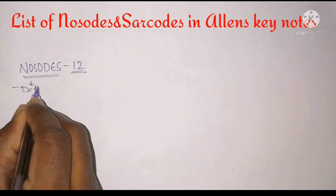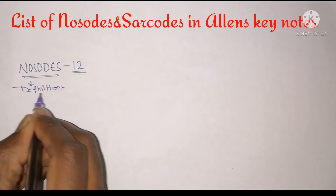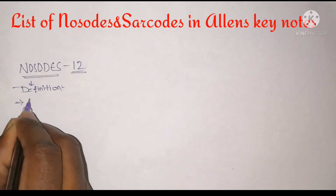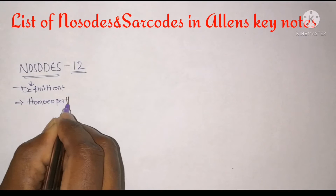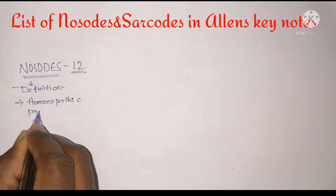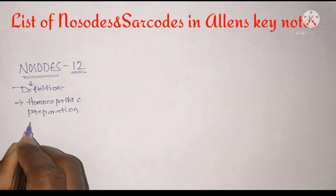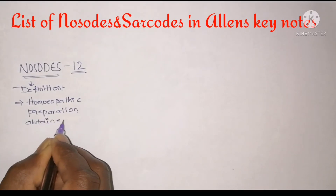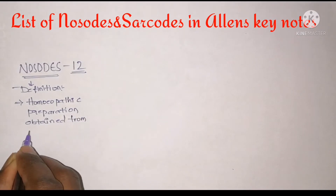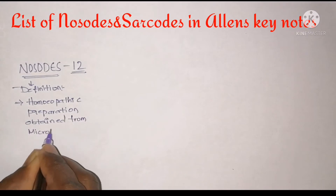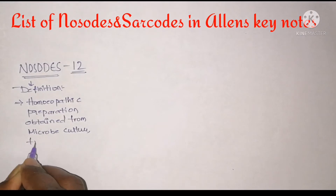There are 12 nosodes in the LNSK notes of homeopathic materia medica. The basic definition of nosodes: nosodes are homeopathic preparations obtained from microbe cultures, from viruses, from fungi, and from pathological secretions — basically from dead tissues or the secretions from dead tissues.